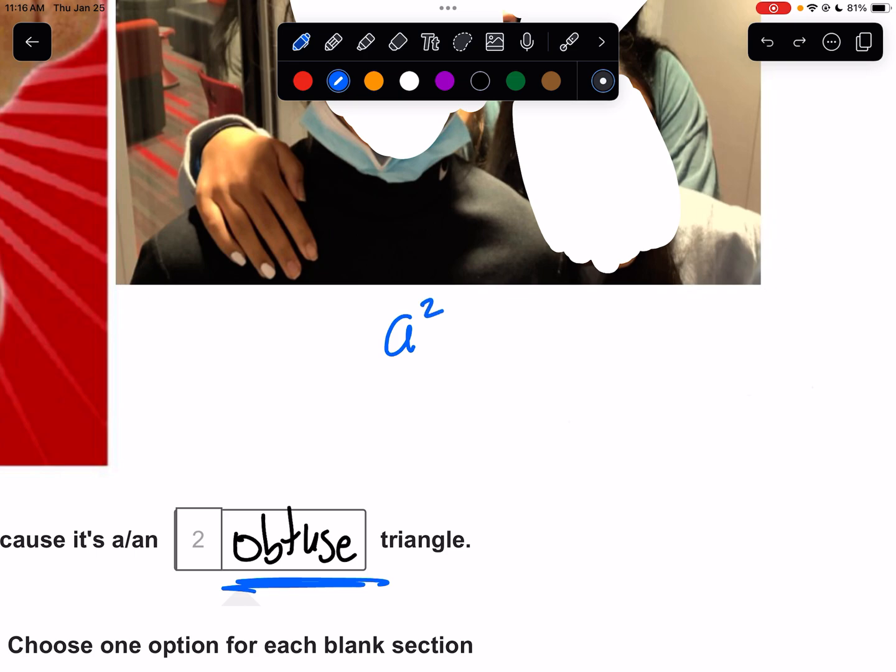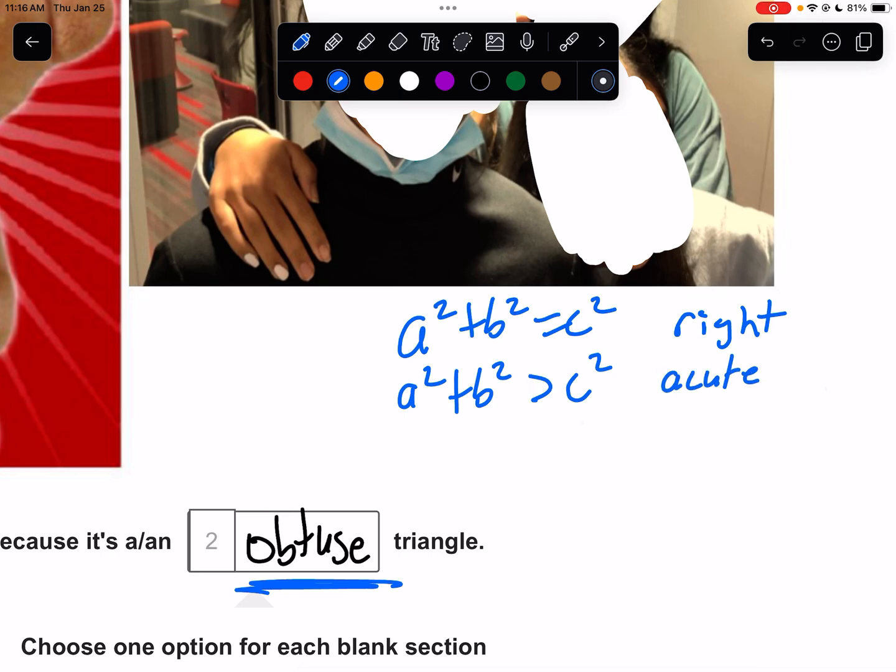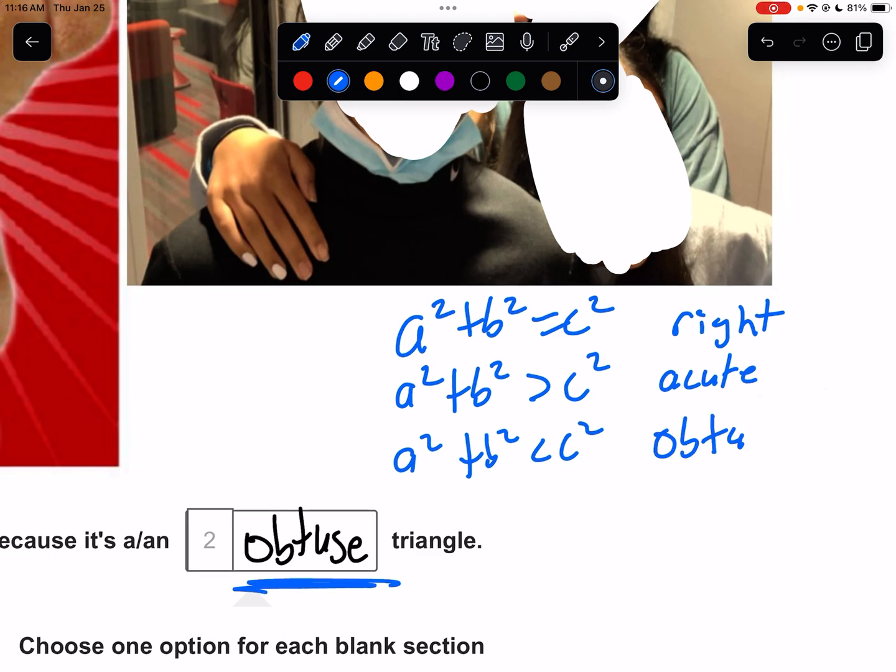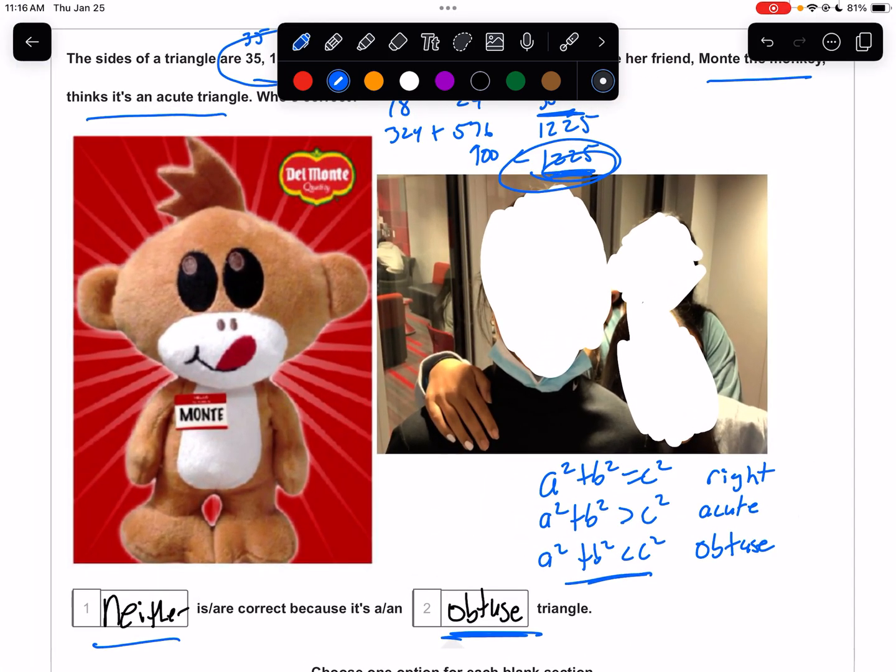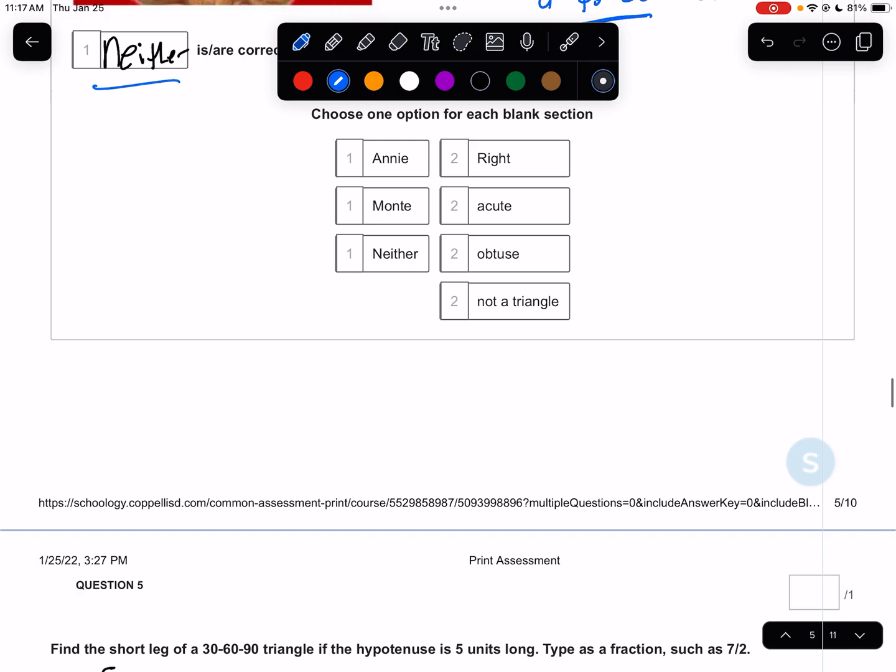So neither are correct. It's an obtuse triangle. Remember the rules. If A squared plus B squared equals C squared, it's a right triangle. If A squared plus B squared is more than C squared, in other words, if C squared is smaller, it's an acute triangle, right? As 90 degrees gets smaller, the right angle gets smaller. The hypotenuse has to get smaller. And if A squared plus B squared is less than C squared, in other words, the hypotenuse got bigger, then that would make 90 degrees get bigger, making it obtuse. And that's what we have here. We have C squared as 1225, which is bigger than A squared plus B squared.